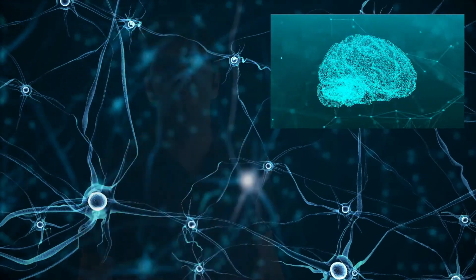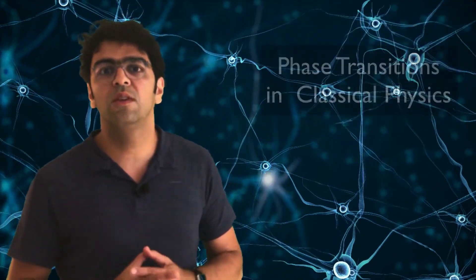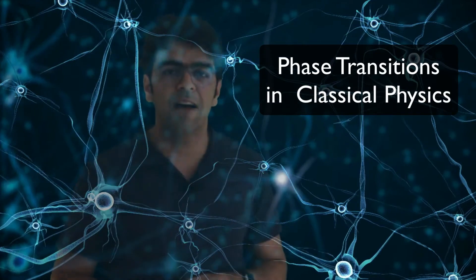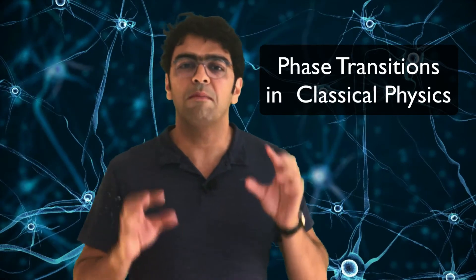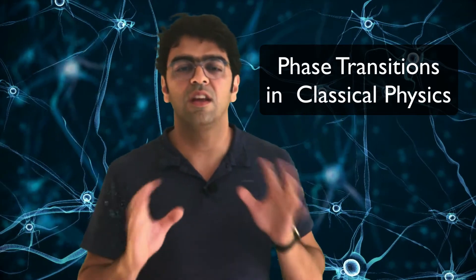Today I'm talking about topological phase transitions in functional brain networks. Phase transitions are well understood in theoretical physics. A phase transition is characterized by a macroscopic change in the properties of a system due to a microscopic change in the system.